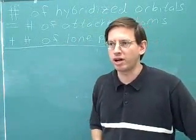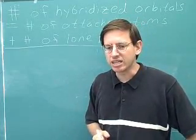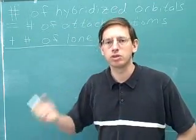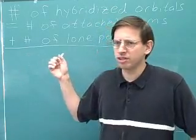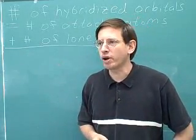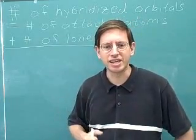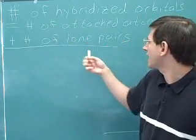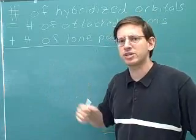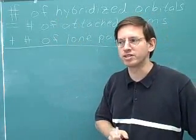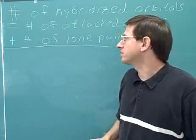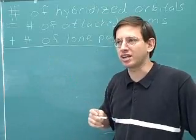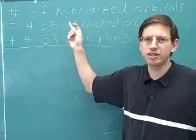In order to identify the pi electrons, we first need to talk about hybridization. You have to be able to look at any atom and quickly identify what its hybridization is: sp3, sp2, or sp. Hückel's rule is usually covered in the second semester of organic chemistry, so by this point you should be pretty quick at identifying hybridization, probably using the rule that the number of hybridized orbitals equals the number of attached atoms plus the number of lone pairs. However, there is an important exception to this rule that is very important when dealing with Hückel's rule.